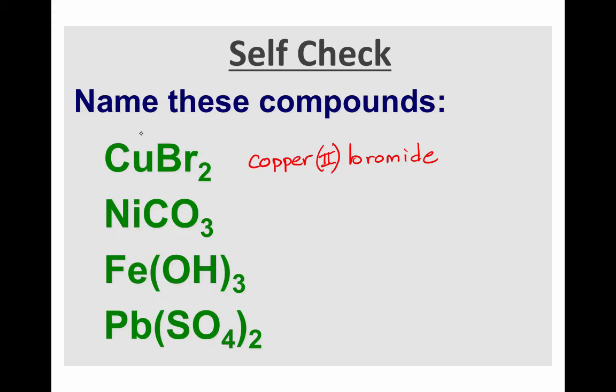How did I know it was copper two? Well, I figured if there's two of these bromide ions, and I know each bromide is a minus one charge, I figured that out from my periodic table, then the copper must be a two plus ion so that all the charges cancel. Let's try the next one.